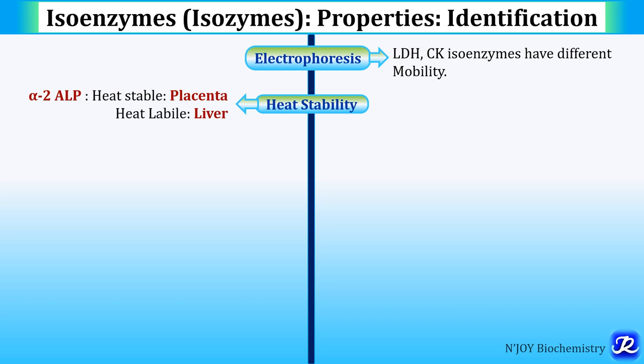For example, alpha-2 alkaline phosphatase has two variants: one present in the placenta which is heat stable, and one present in the liver which is heat labile.